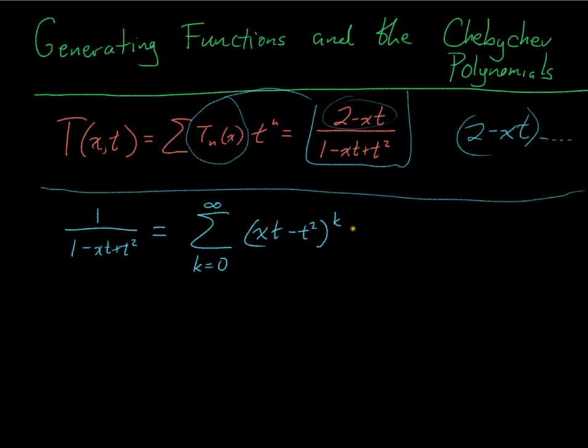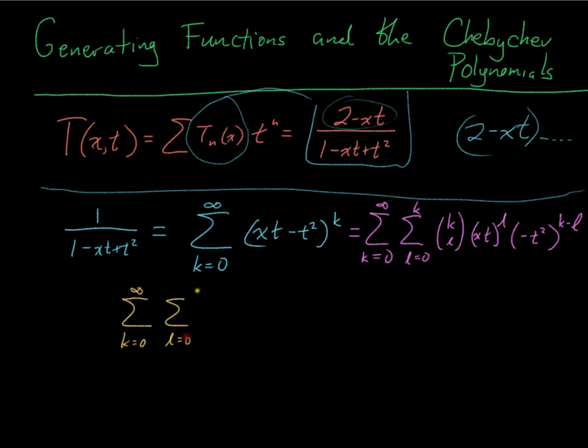So the next thing I'm going to do is take this and use the binomial theorem to expand it out. So this is the sum from k equals 0 to infinity, l equals 0 to k, k choose l. And I've got (xt) to the l, and I've got (minus t squared) to the k minus l. So if I just expand that out, it'll actually make it a lot easier, let me make a little change.